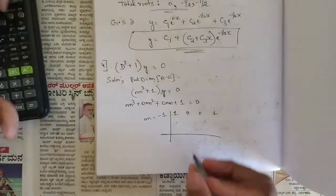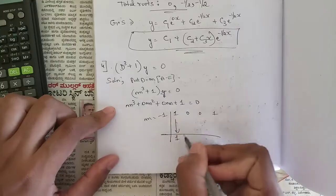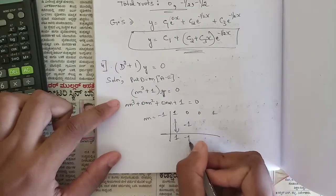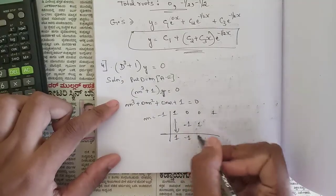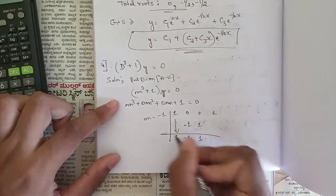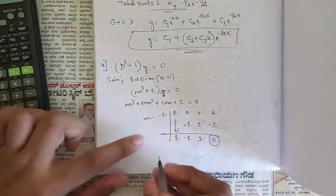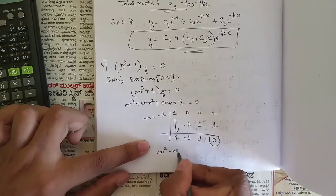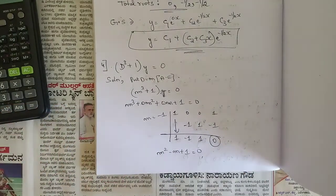Bring 1 down. Multiply −1 × 1 = −1; 0 + (−1) = −1. Then −1 × (−1) = +1; 0 + 1 = 1. Then −1 × 1 = −1; last term is 0. The resulting quadratic equation is m² − m + 1 = 0.